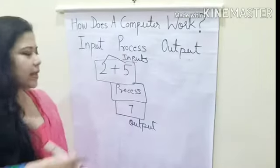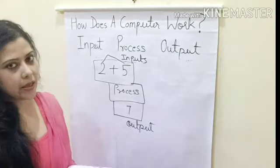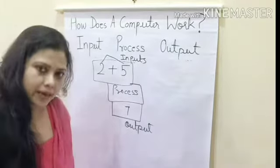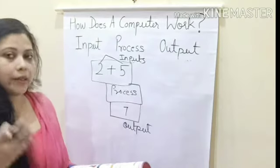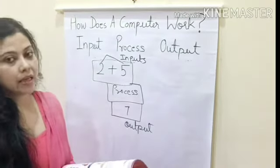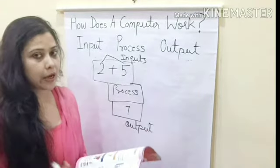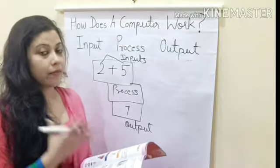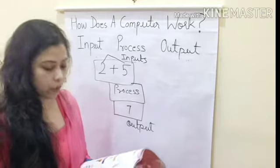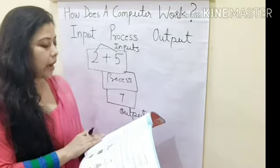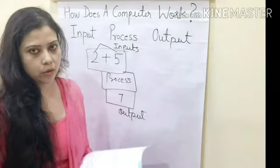So, in this way, children, step by step a computer works. It works through the input, process, and output cycle. I hope this example is clear to you. I hope this chapter and all the examples — the pencil, dirty cloth, body, mango shake — are clear to you. With this we come to the end of the chapter and also the end of the computer syllabus for FA1, that is Assessment 1.